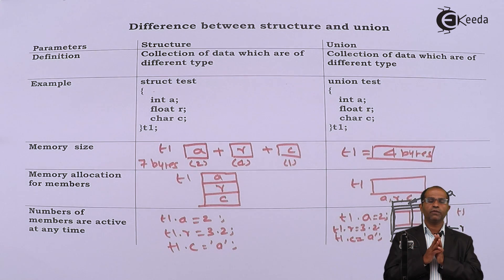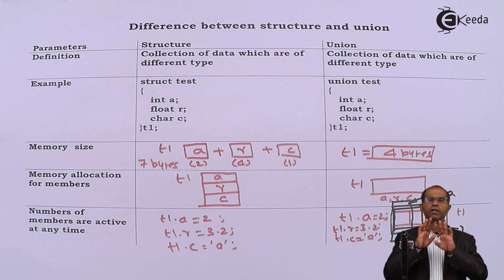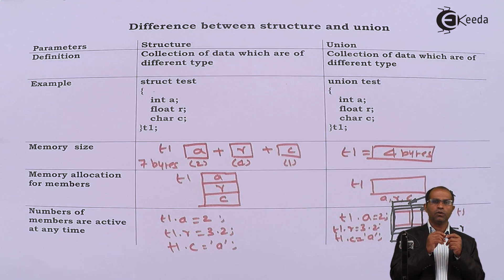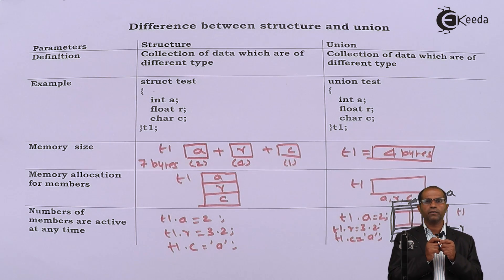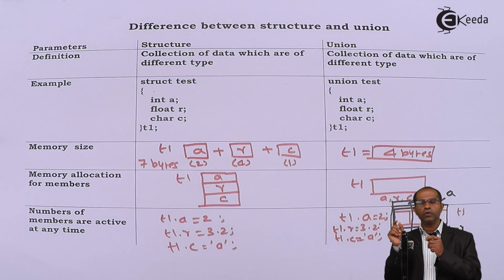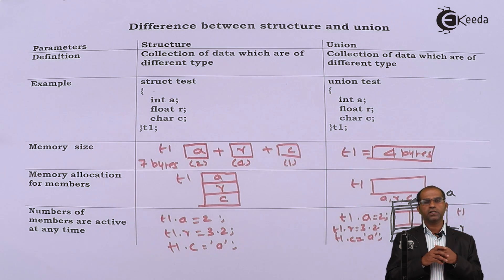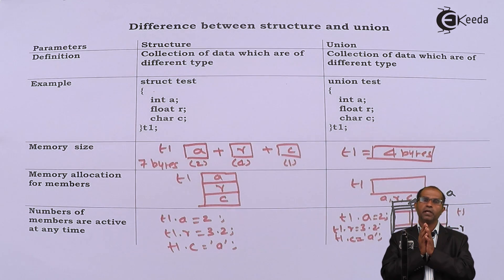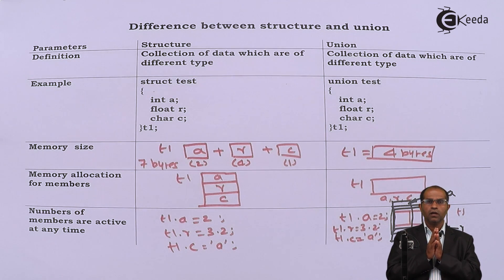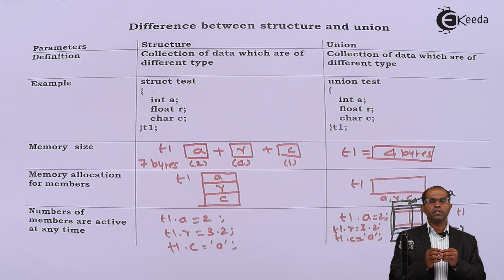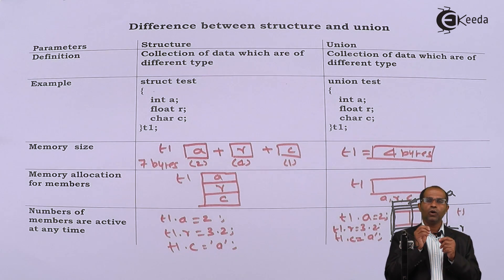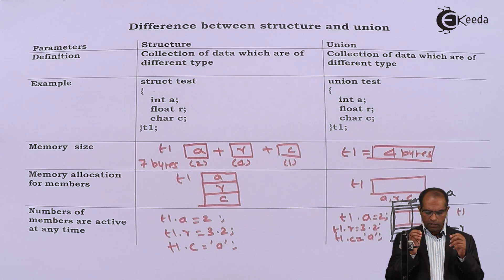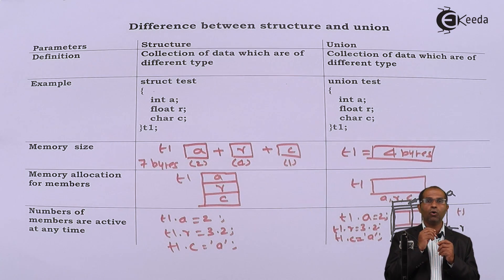To summarize the differences: both are collections of different data types. Structure uses keyword 'struct'; union uses keyword 'union'. Size of a structure variable equals the sum of sizes of every individual member. Size of a union variable equals the size of the member with maximum size. Every member of a structure has separate memory; union members share common memory. In a structure, all members are active at any given time; in a union, only the last-operated member is active — previous members get overwritten.